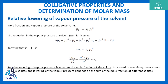This ratio delta p1 / p1° is called the relative lowering of vapor pressure, and it equals x2, the mole fraction of the solute particle. If there are more than two components, this term becomes the summation of all mole fractions of the solute particles.